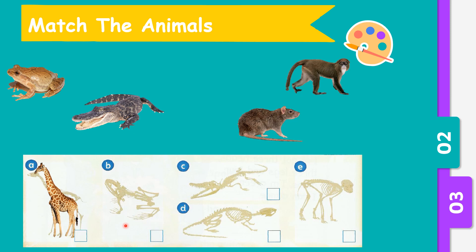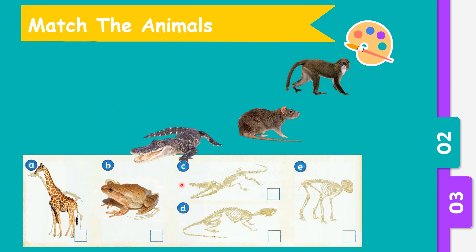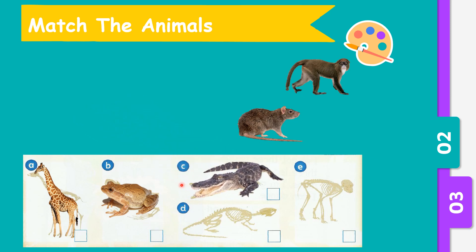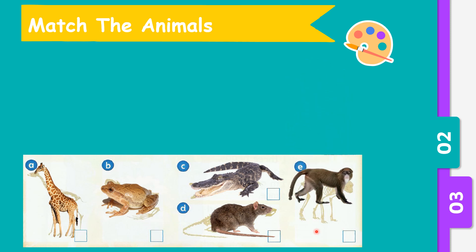Amazing — it's a frog. Now what animal is this? It's based on a skeleton. Well done, it's a crocodile. What about this animal skeleton? Yes, it's a rat. And what about the last skeleton? Correct, it's a monkey.